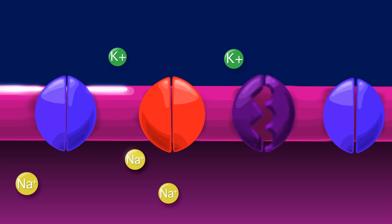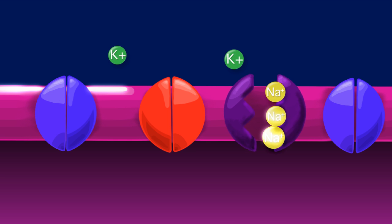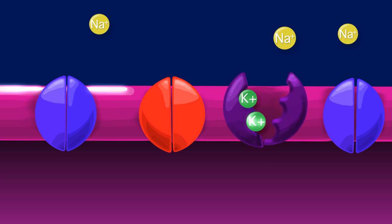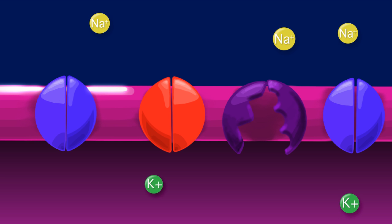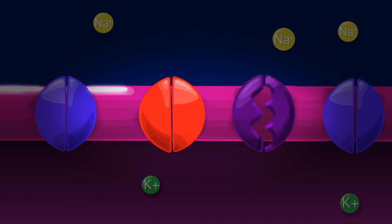The sodium-potassium pump restores the ion concentrations with the help of ATP. Three sodium ions are pumped out of the cell membrane and two potassium ions are pumped in until the ion concentrations are back to normal. The action potential is now on its way to the axon terminal.